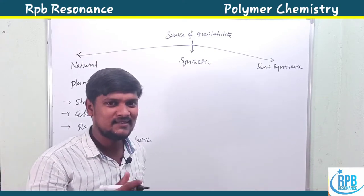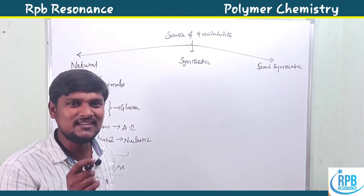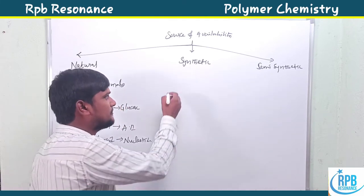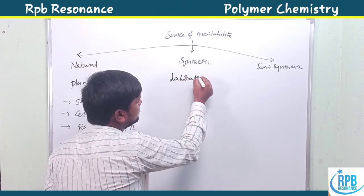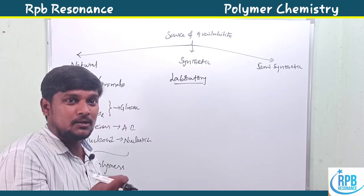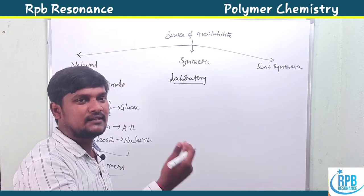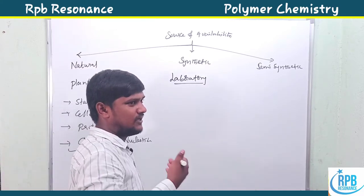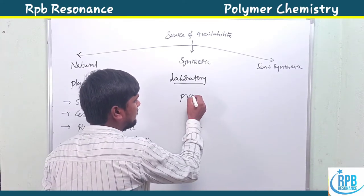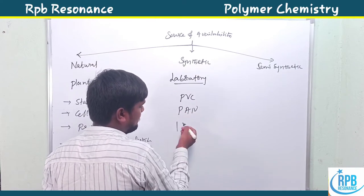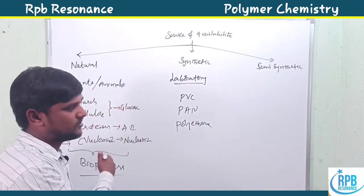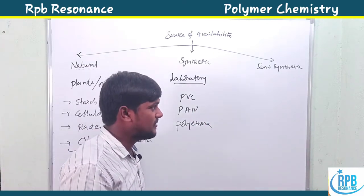The second type is synthetic polymers. Synthetic polymers are prepared by laboratory methods — polymers prepared by laboratory synthesis. Nowadays, almost every polymer is synthesized in the laboratory, such as PVC, PAN, and polythene. These kinds of polymers come under synthetic polymers.